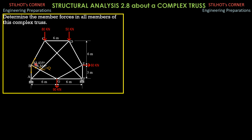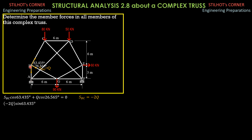Summation of forces horizontal equals 0: SBG cosine of 63.45 degrees plus Q cosine 26.565 degrees equals 0. So SBC is equal to, in terms of Q, negative 2Q. Summation of forces vertical: SBC, which is negative 2Q, sine of 63.45 degrees equals SAB plus Q sine of 26.565 degrees. So SAB, expressed in terms of Q, is equal to negative 2.2361Q.